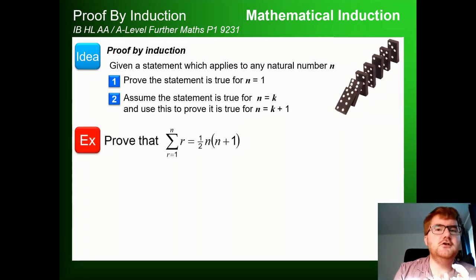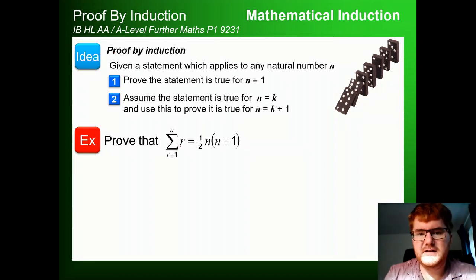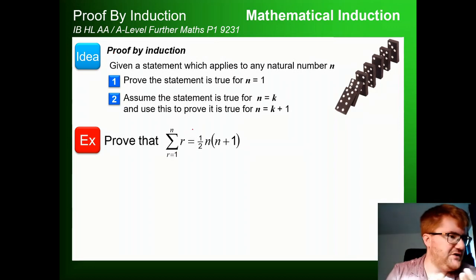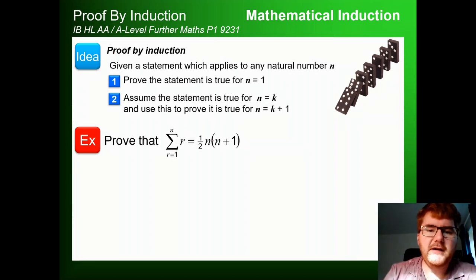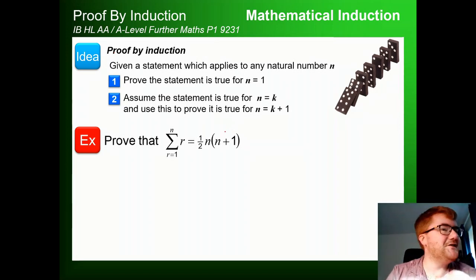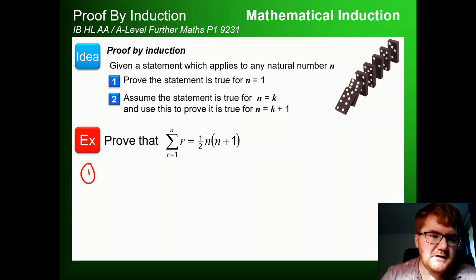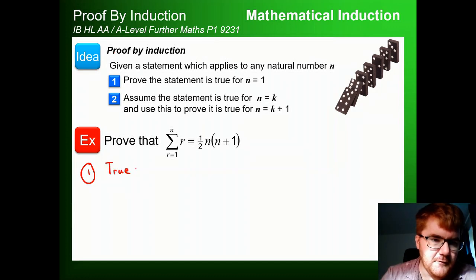Let's look at some examples. We need to prove first of all that the sum from r=1 to n of r is equal to ½n(n+1). We go through two steps: the first step is the base case, which is always the easy step, and then step 2 is where it can get quite tricky. So the first thing we're going to do is show this is true for n=1.